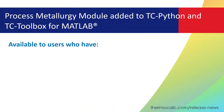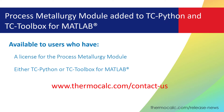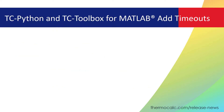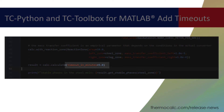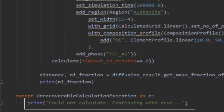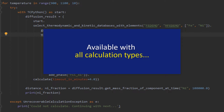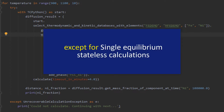This new integration is available to users who have a license for the Process Metallurgy module and either TC-Python or TC-Toolbox for MATLAB. Contact your local representative to learn how to obtain a license for these powerful new tools. TC-Python and TC-Toolbox for MATLAB now allow users to set timeouts for each calculation in a script in order to prevent the program from hanging on calculations that take too long. If a calculation cannot be completed in the set time, the program will move on to the next calculation rather than aborting the entire script. The timeout parameter is set in the calculate method and is available with all calculation types except for single equilibrium stateless calculations.